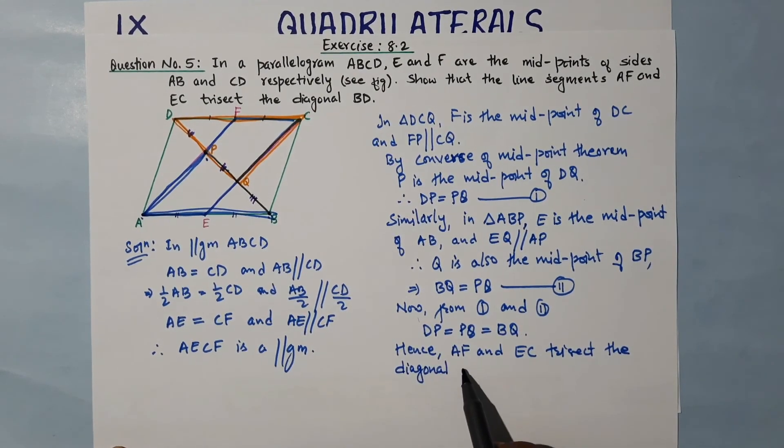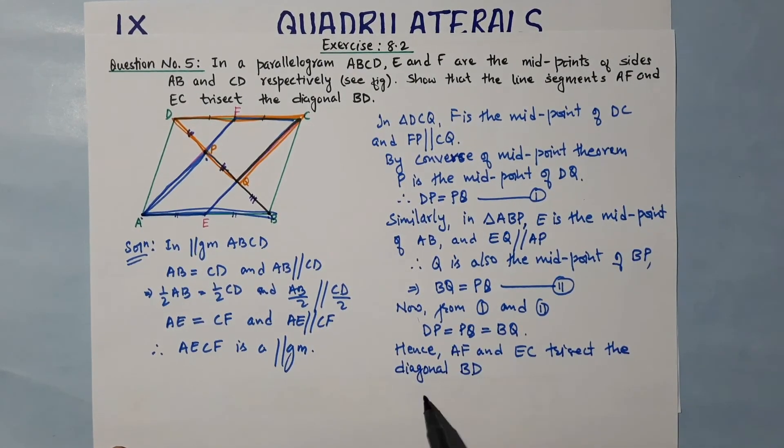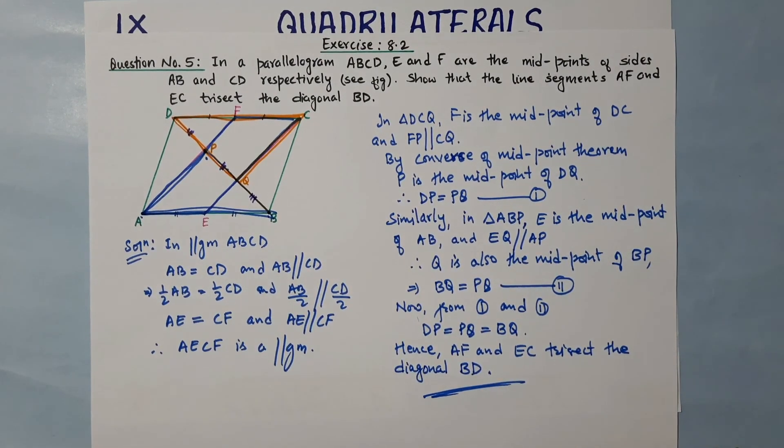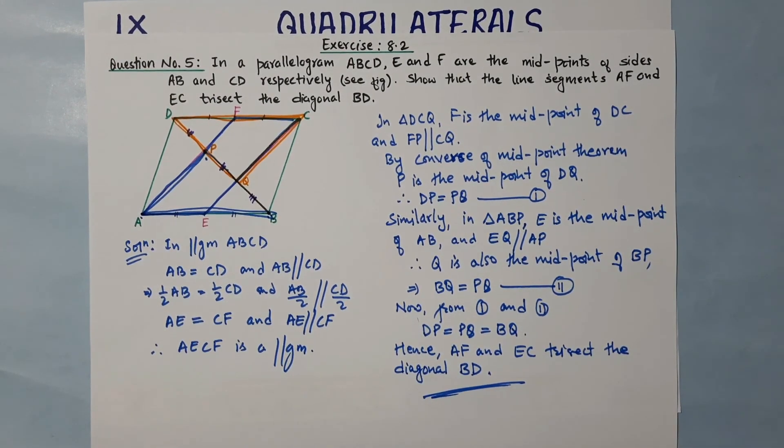...AF and EC trisect the diagonal BD. This is the solution to question number 5 from exercise 8.2. The remaining questions will be in our next class. Till then, keep practicing, and thank you very much.